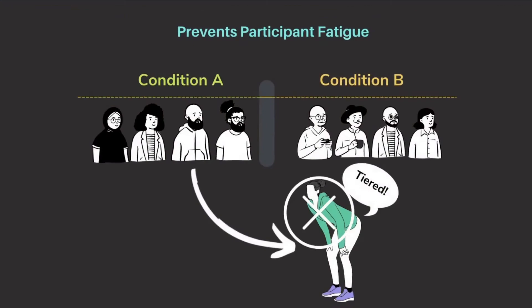The next advantage of using the between-subjects design is that it prevents participant fatigue. Because each participant participates only in one condition, they don't have to repeatedly participate across different conditions or groups, which allows them to avoid effects of fatigue. This is very important, as getting fatigued can negatively impact participant performance in cognitive tasks, impairing our conclusions about the research question.